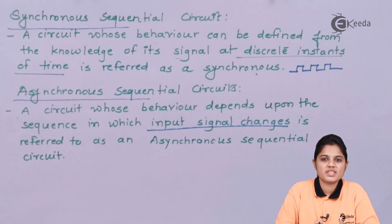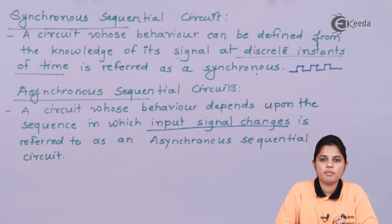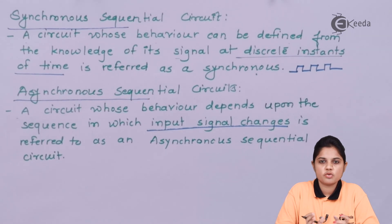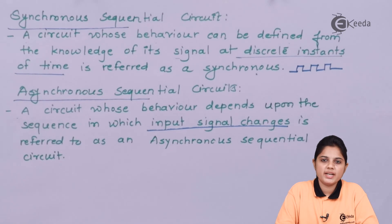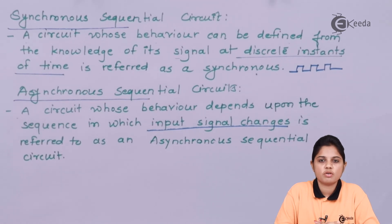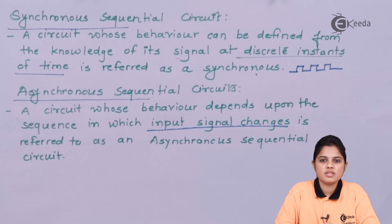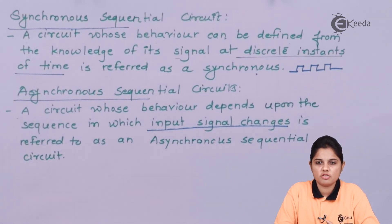We are going to see different types of flip-flops, which use memory elements to store bit information and reproduce it as an output after some delay. Such devices are called sequential circuits. If a clock is provided it is a synchronous sequential circuit, and if the device is not clocked it is asynchronous. In the upcoming videos we are going to see which are the synchronous sequential circuits and which are the asynchronous sequential circuits.